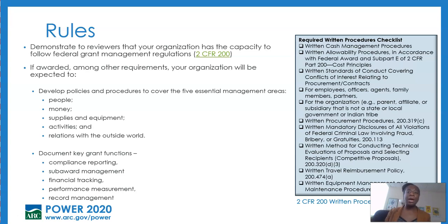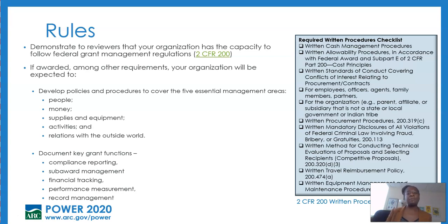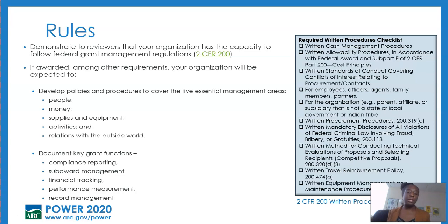Your policies and procedures are going to cover things like management of people, hiring and firing, financial tracking, supplies and equipment, execution of activities, and engaging with other organizations whether to contract out other work. Some other key grant functions that you'll be expected to do as a Power recipient include compliance reporting, sub-award management — making sure that partners receiving money are complying with all of the rules for 2 CFR 200 — performance measurement, tracking of reimbursement, and general record management. In this section of your application, you'll want to make sure that you're outlining that you are aware of 2 CFR 200 and that you have the capacity to comply with all of the regulations outlined. You'll probably want to share some of your federal grant management experience in the past — what federal awards or large foundation awards you've received and your ability to comply with grant management rules.